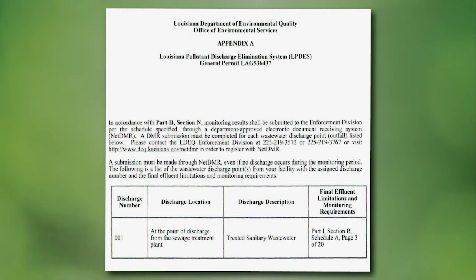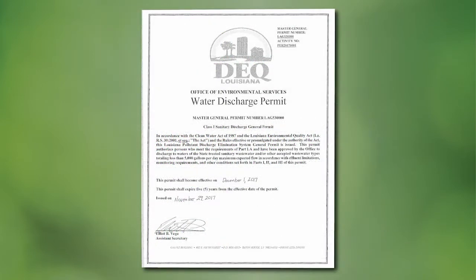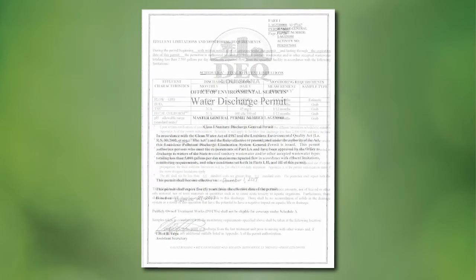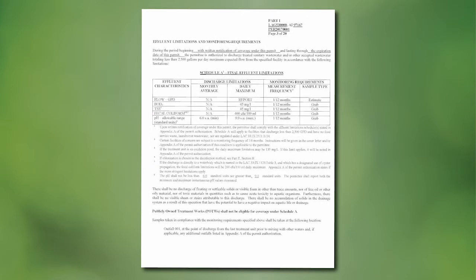It will look something like this. For example, it says Part 1, Section B, Schedule A, Page 3 of 20. So you would go to your LAG-53 permit that you downloaded, go to page 3 of 20, and it will list the effluent characteristics or parameters that you would need to ask your testing facility or lab to test on your wastewater.